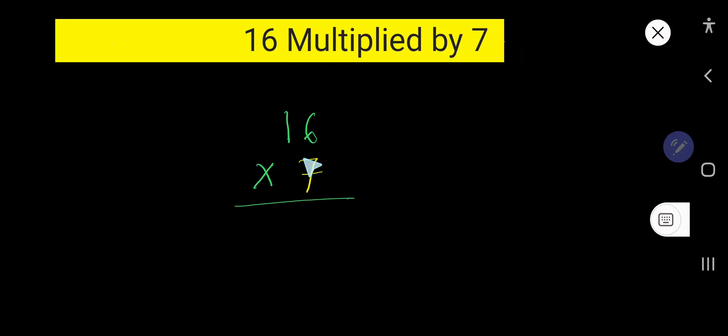16 multiplied by 7. That is, we need to multiply 16 by 7. So look, 7 times 6 equal to what? We need multiplication table. 7 times 6 is equal to 42. If you forget 7 times 6 equal to what?